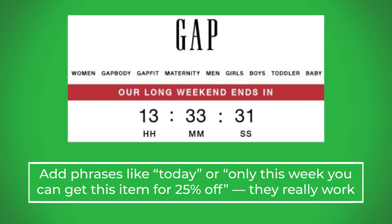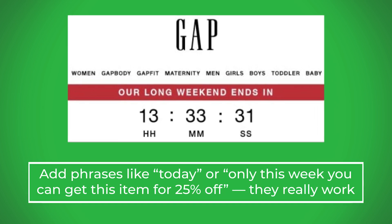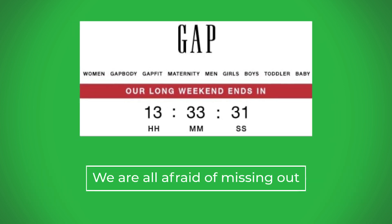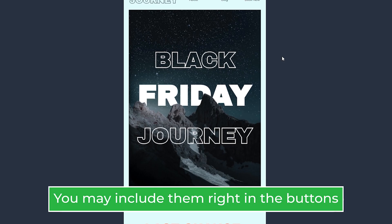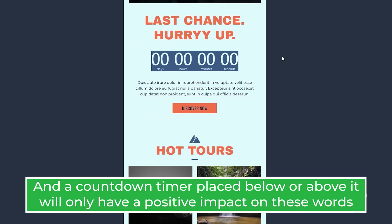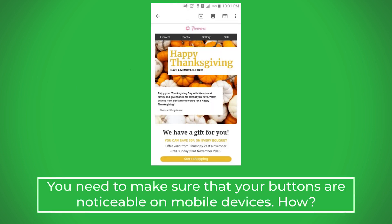Add phrases like "today" or "only this week, you can get this item for 25% off" — they really work. We are all afraid of missing out. You may include urgency phrases right in the buttons, and a countdown timer placed below or above the button will only reinforce their impact.